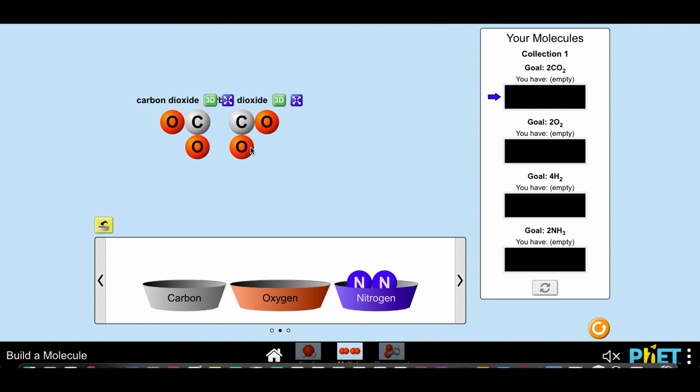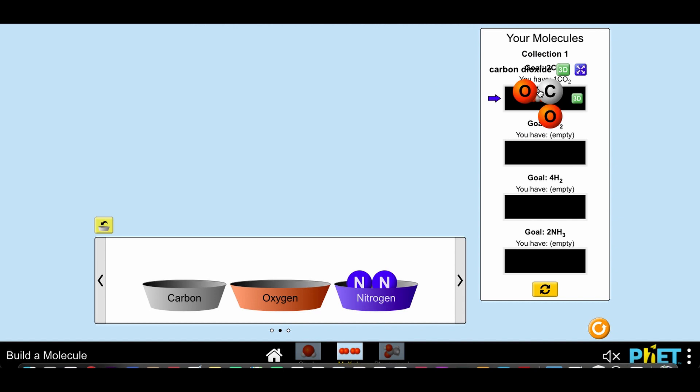Clicking again will cause the bonds to be cut and the molecule to be separated. We now have two molecules of carbon dioxide to place into our collection.